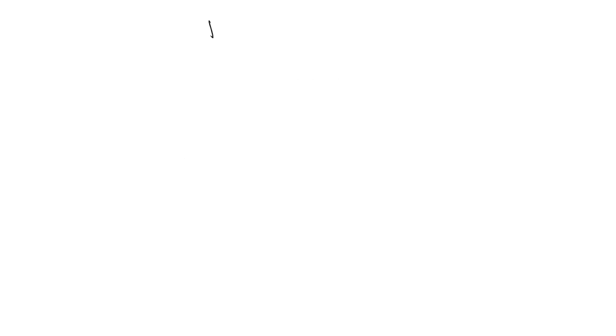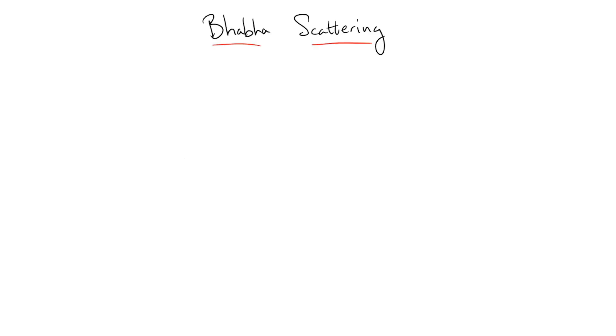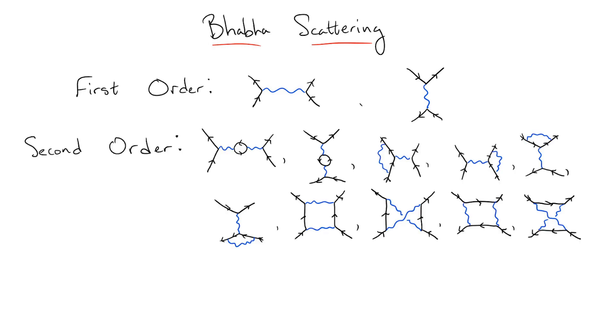In our example of QED Bhabha scattering, if we neglect any diagrams with loops on external lines that can be absorbed into the definitions of the fermions, at second order we have 10 diagrams, and at third order we have 122.